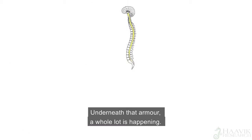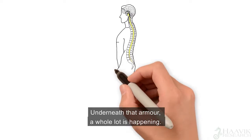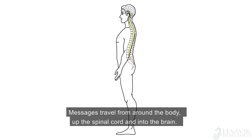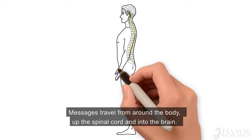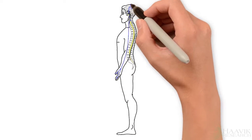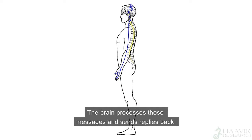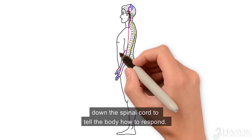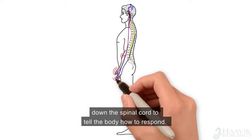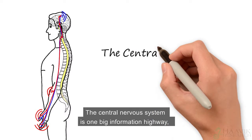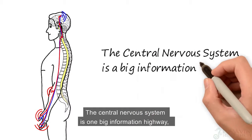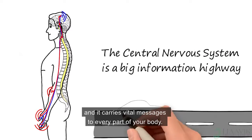Underneath that armor, a whole lot is happening. Messages travel from around the body up the spinal cord and into the brain. The brain processes those messages and sends replies back down the spinal cord to tell the body how to respond. The central nervous system is one big information highway, and it carries vital messages to every part of your body.